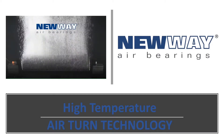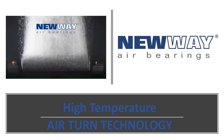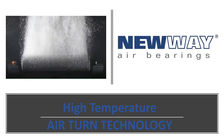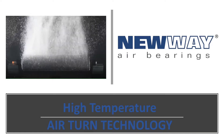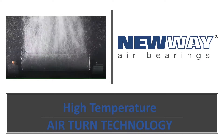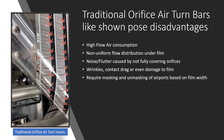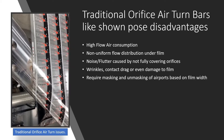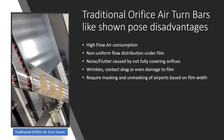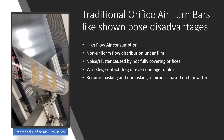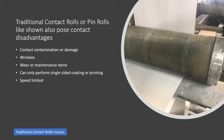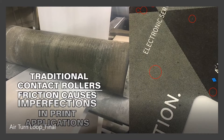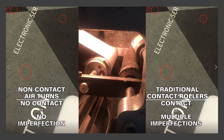Porous Media Airturn Technology from New Way Air Bearings. In traditional thin film and web handling processes, air bars are used to change the direction of the film or web. Contact rollers or pin rollers may also be used, leading to surface damage and wear.